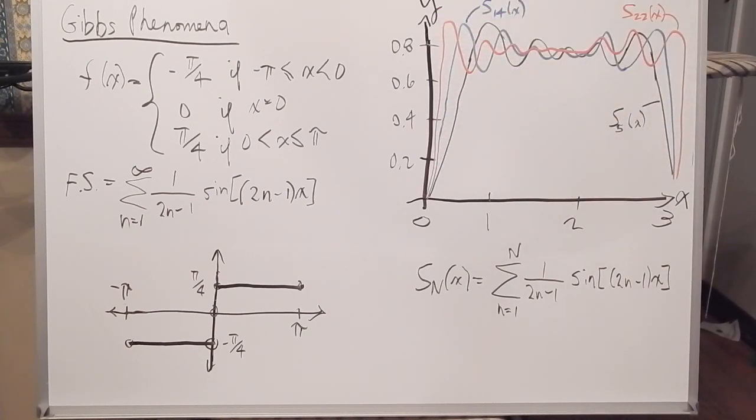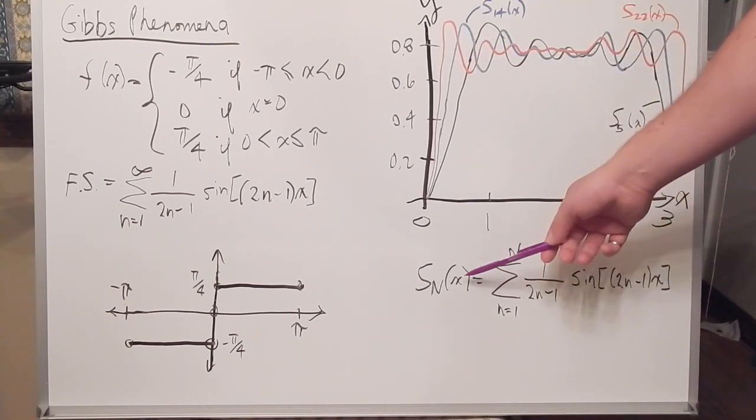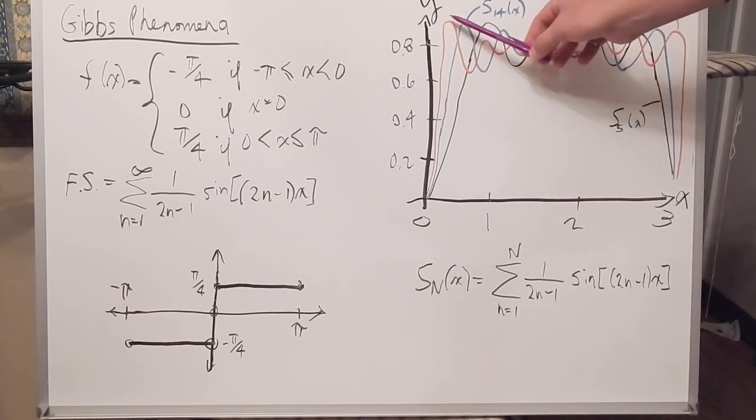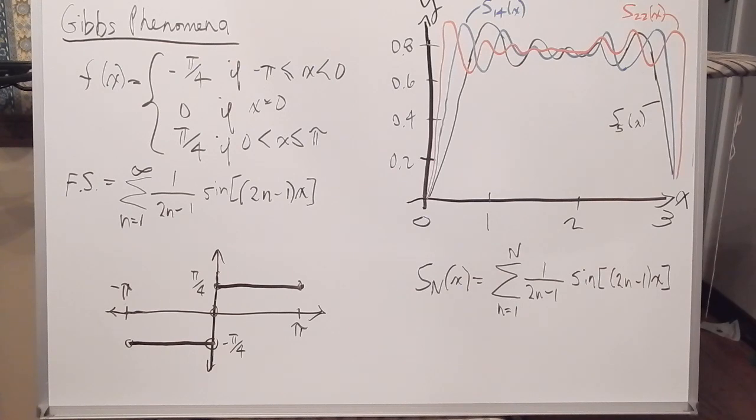And since the partial sums approach the function as n approaches infinity, we might expect these peaks to flatten out and become smaller as n gets larger. But this does not occur.